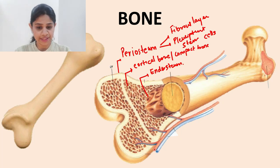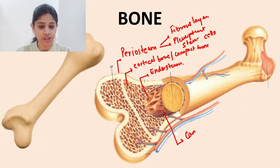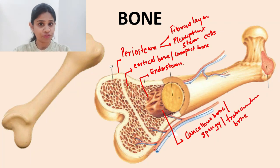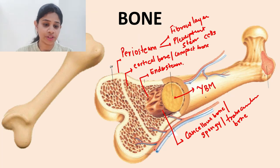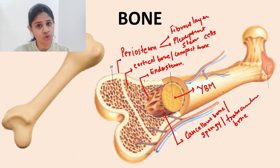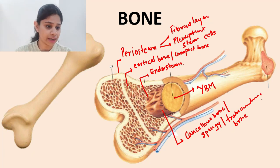The fourth layer is a layer of cancellous bone, also termed spongy bone or trabecular bone. The fifth layer, present right beneath the cancellous bone, is termed the medullary cavity or marrow space. This space either harbors yellow bone marrow, which is important as it stores fat, or red bone marrow.